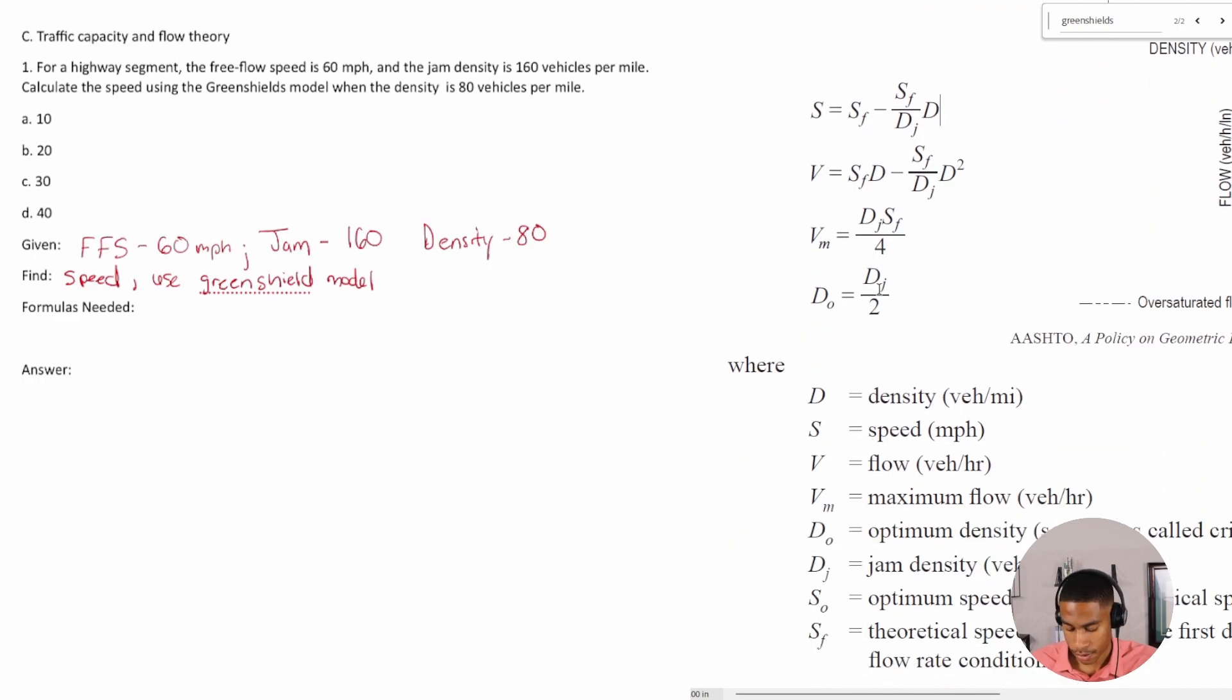So basically now we just want to check to see if we have the variables that we need so that we can find the value that we need. So what is S_f? The theoretical speed or free flow speed. All right, we have S_f, that is our 60. And then D_j stands for jam density. We have that. And what about our other variable, which is D, which is the regular density that is in vehicles per mile. So we have everything that we need to solve this.